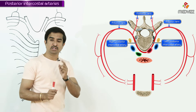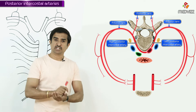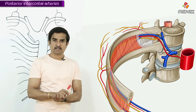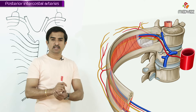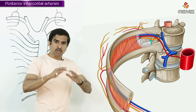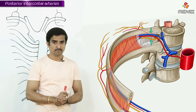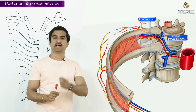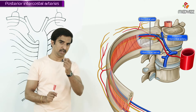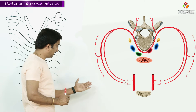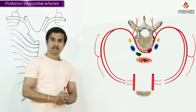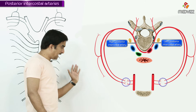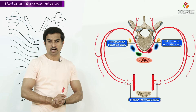In the intercostal space, the anterior rami of the posterior intercostal artery runs between the intercostal vein above and the intercostal nerve below, forming a neurovascular bundle. So the neurovascular bundle in the intercostal space consists, from superior to inferior, of the intercostal vein, the posterior intercostal artery, and the intercostal nerve. The posterior intercostal arteries terminate at the costochondral junction by anastomosing with the anterior intercostal artery.